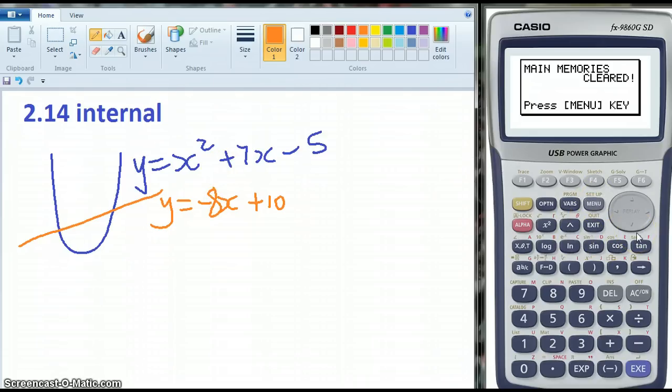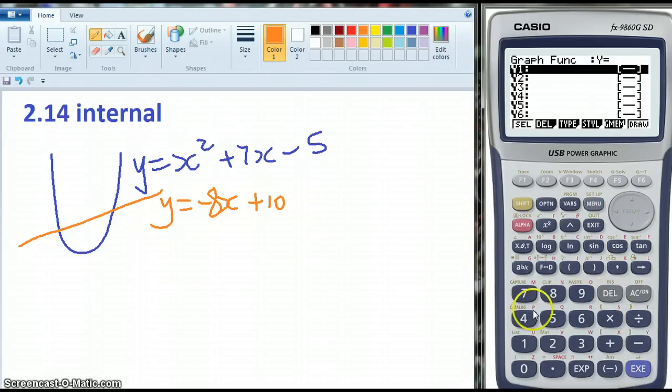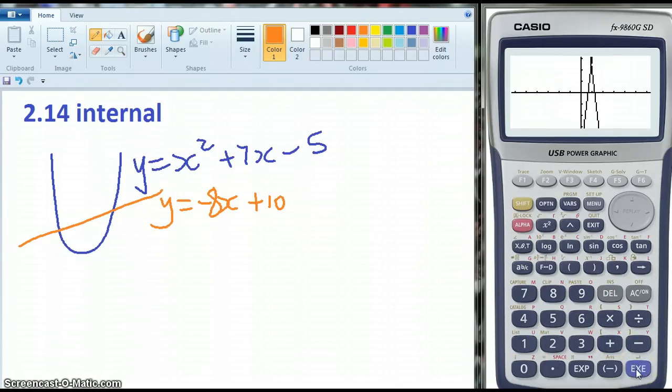Speedy way, before I do anything else, I am going to go into graph. And I'm going to put my X squared plus 7X minus 5. Execute. And I'm going to go minus 8X plus 10 for my straight line. Execute. Draw.